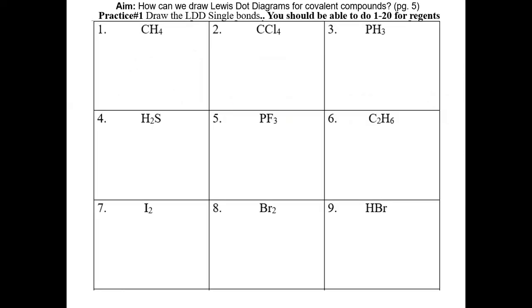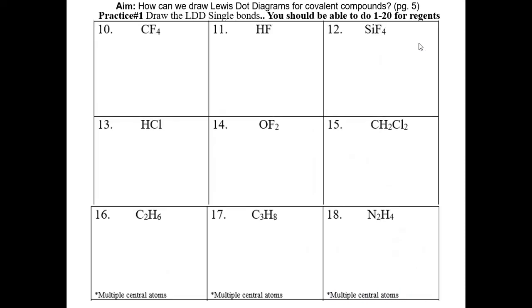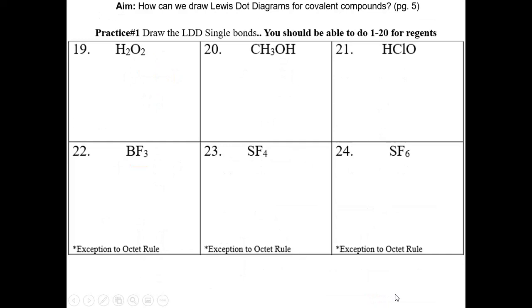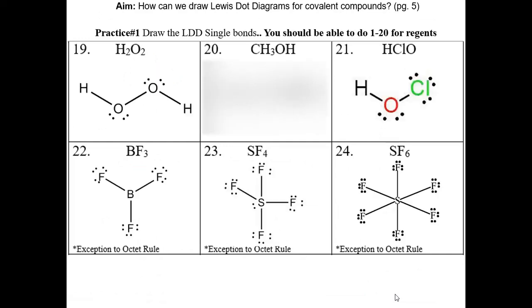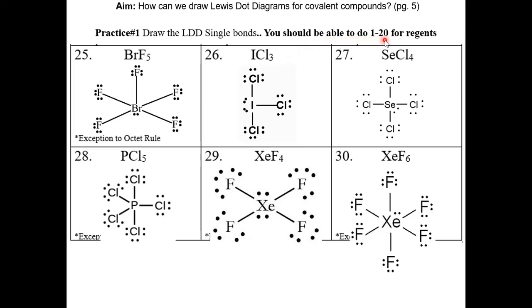For practice number one, draw the Lewis dot diagram for each covalent compound. You should be able to do problems 1 to 20 for the Regents; from 21 on are challenge questions. Here are the answers from 1 to 9, 10 to 18, and 19 to 24. Note that problems 16 to 18 have multiple central atoms. Remember, boron and sulfur have exceptions to the octet rule: boron has just six electrons, sulfur can have 10 or 12. Here are the answers from 25 to 30. You should be able to do 1 to 20 for the Regents.